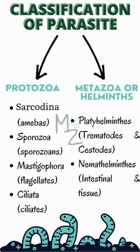Nematohelminthes are also called Nematodes. They include Intestinal Nematodes, for example, Ascaris lumbricoides, and Tissue or Somatic Nematodes, for example, Dracunculus medinensis. Hope it helped!